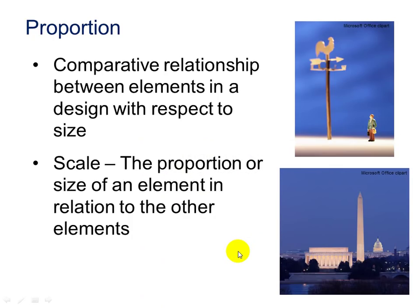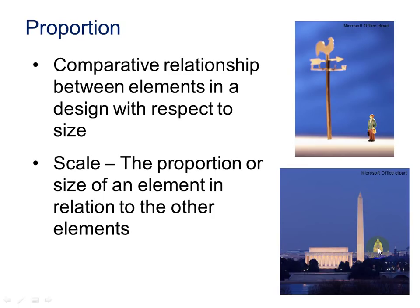Proportion is the comparative relationship between elements with respect to size. Here we see a proportion as this little figure is smaller than this weather vane. Scale is the proportion or size of an element in relation to the other elements. Because of its height, the Washington Monument is the most prominent structure in Washington, D.C. — we've used its scale, its size in relation to the other elements, to show its importance.